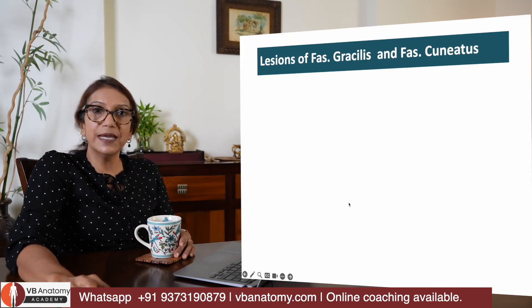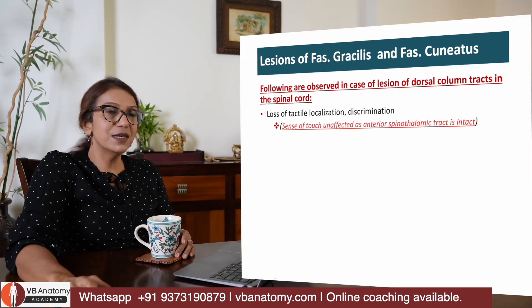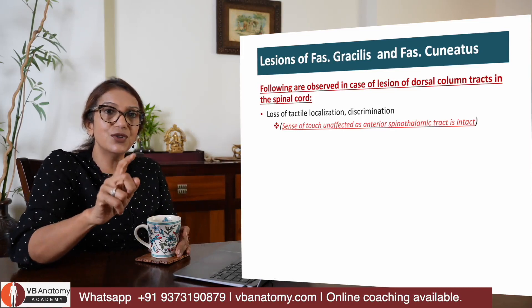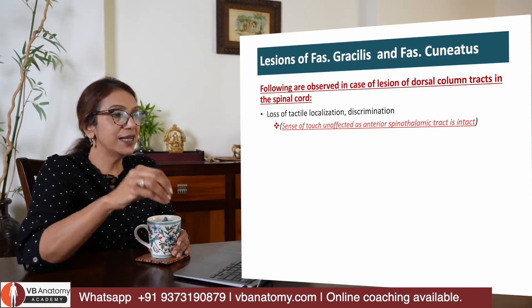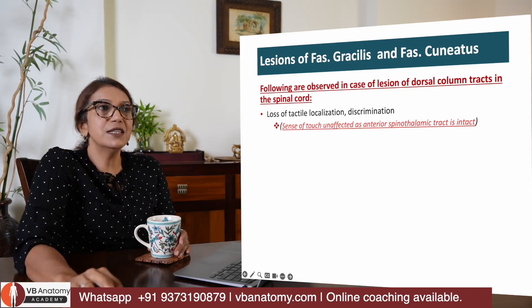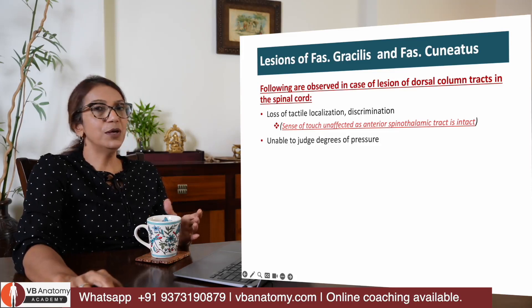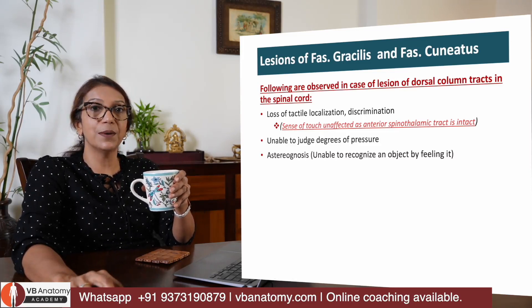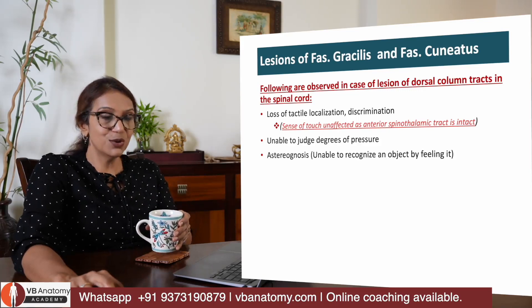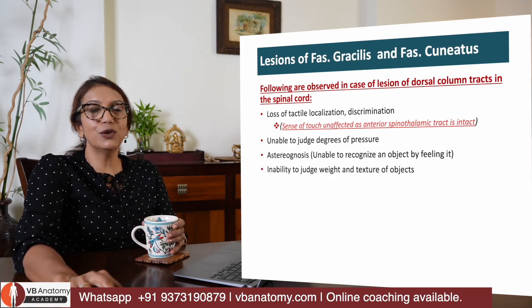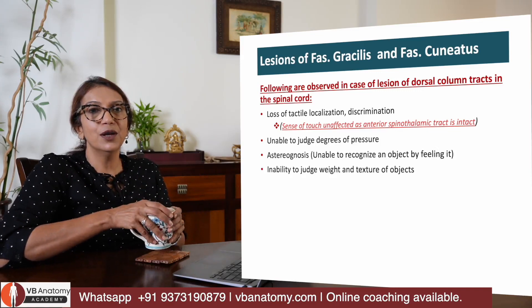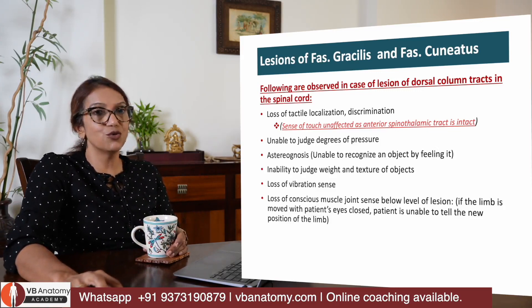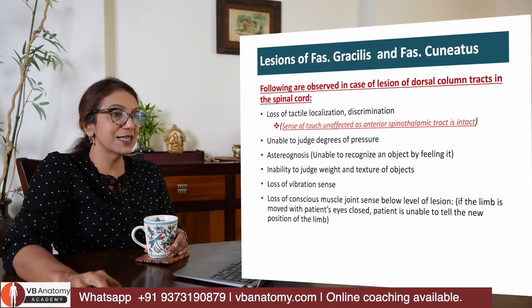So what are the lesions of fasciculus gracilis and cuneatus? There is loss of tactile localization and discrimination. Does the person lose touch completely? No — because the anterior spinothalamic tract is still carrying touch. There is inability to judge degrees of pressure, astereognosis — the person can't identify an object by feel alone, only when they look at it — inability to judge the weight of an object, loss of sense of vibration, and loss of muscle-joint sense.